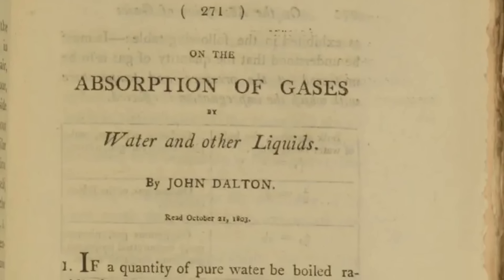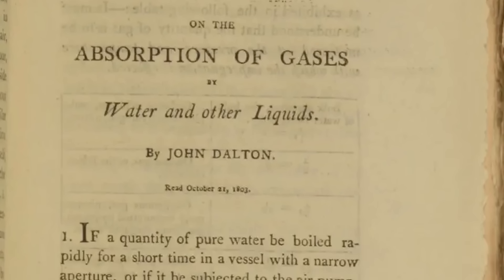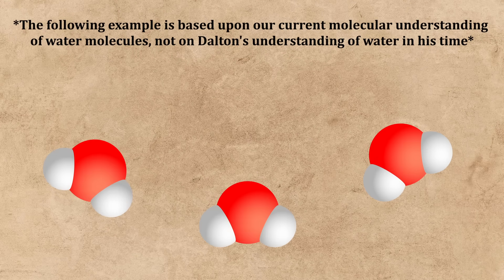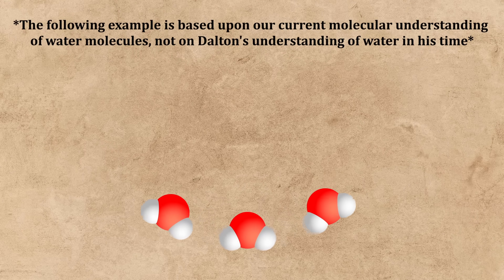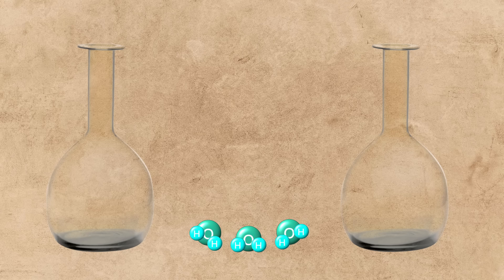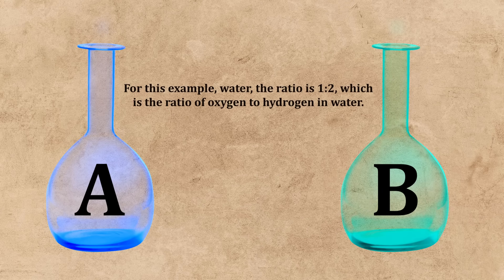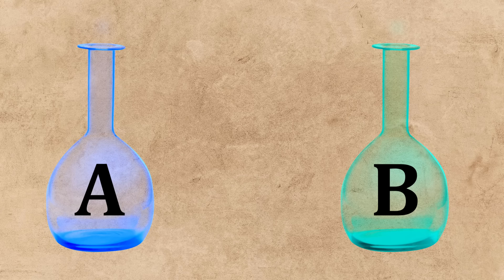In 1803, Dalton published a paper on the absorption of gases by liquids. In this paper, Dalton pointed out an interesting pattern regarding molecules. In compounds that contain two particular elements, the amount of element A per measure of element B will differ across these compounds by ratios of small whole numbers. This characteristic would later become known as the law of multiple proportions.